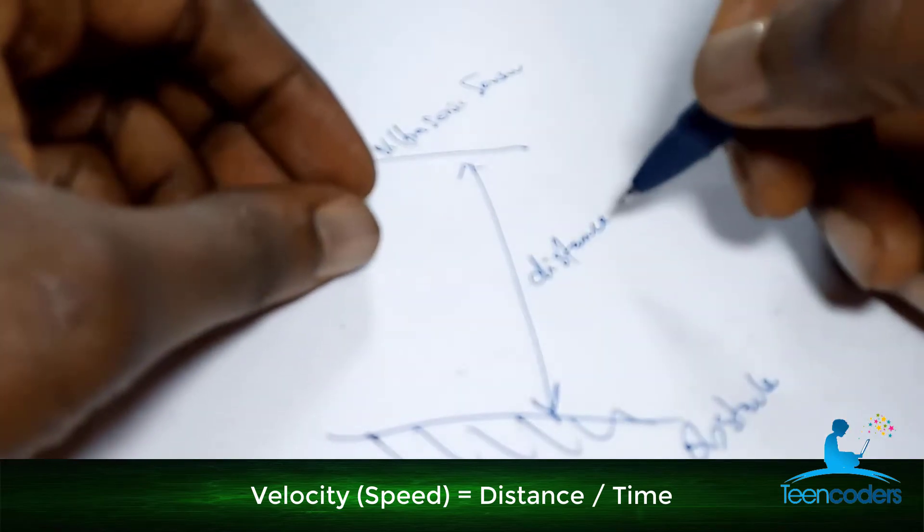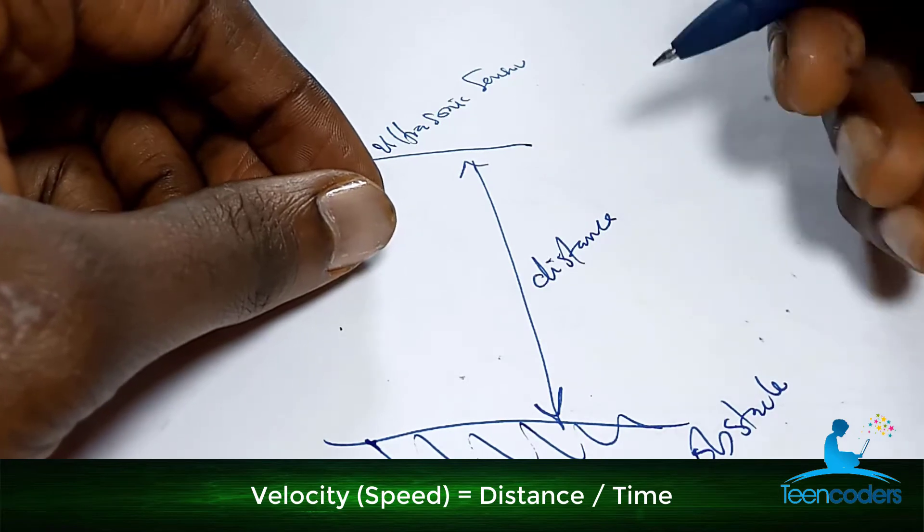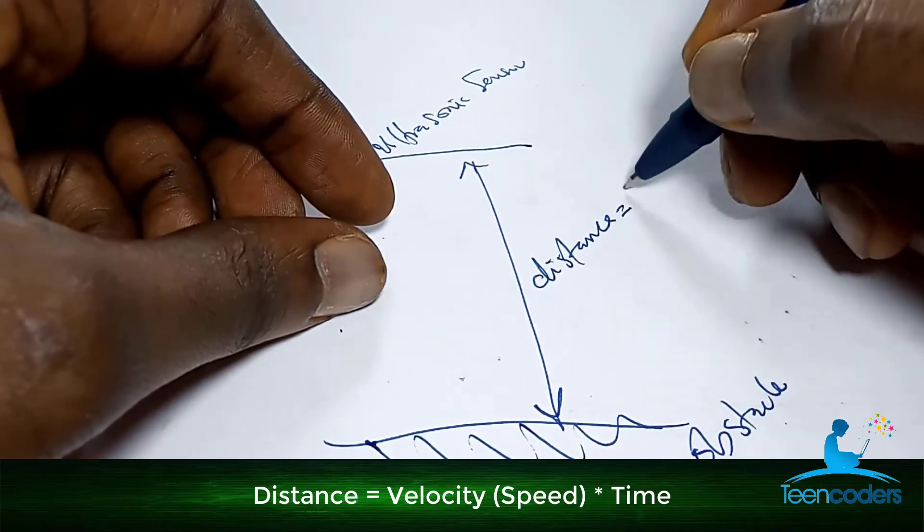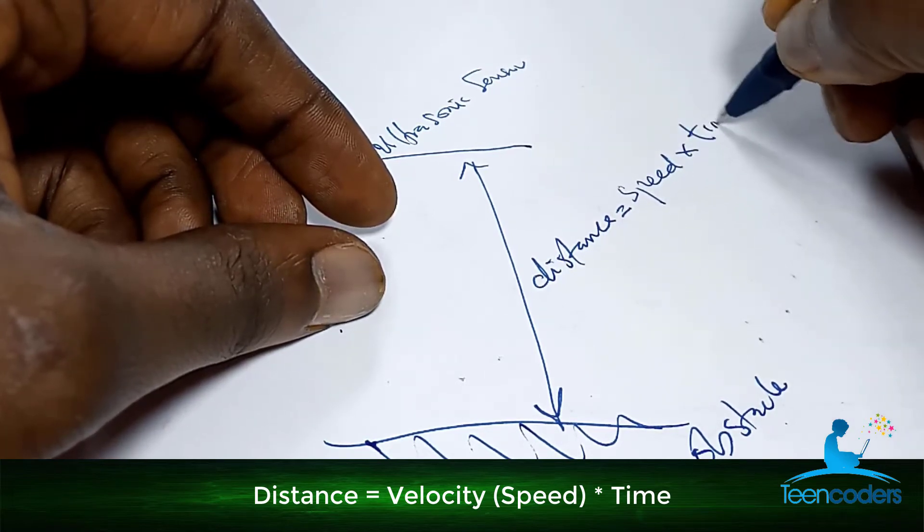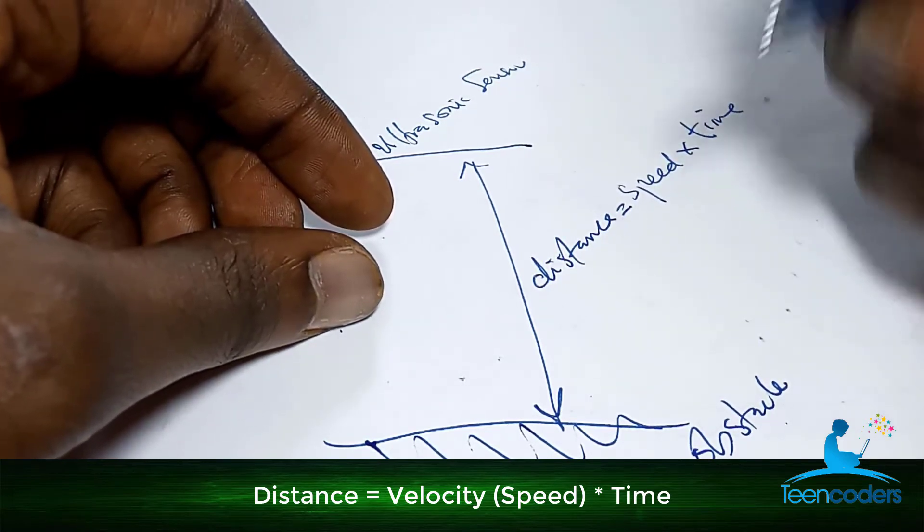In physics, we say the velocity is equal to distance all over time. That means distance is equal to speed, which is velocity times the time.